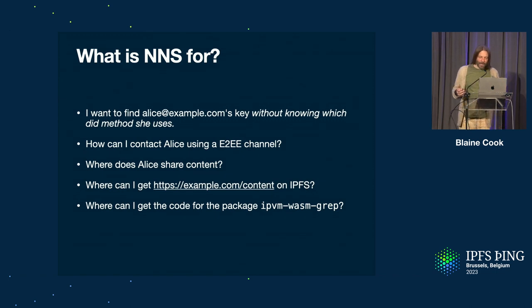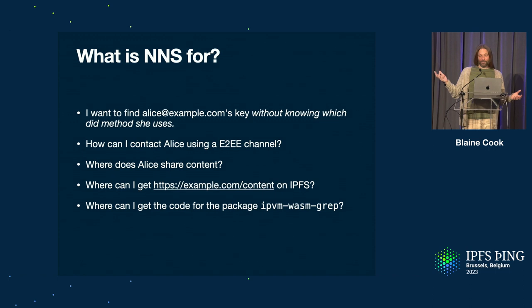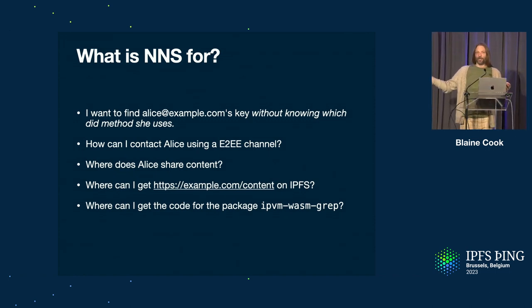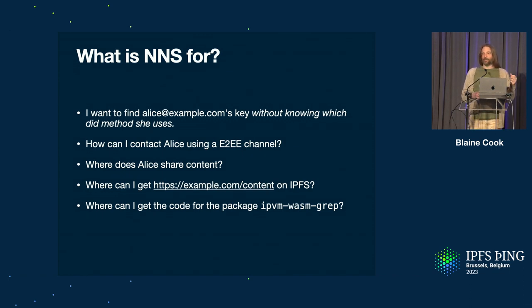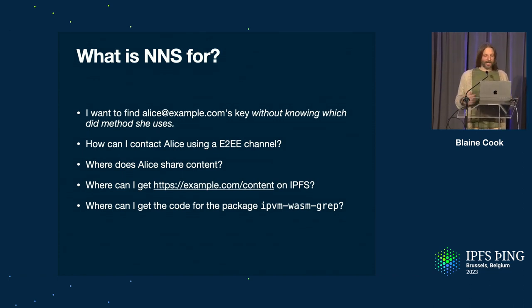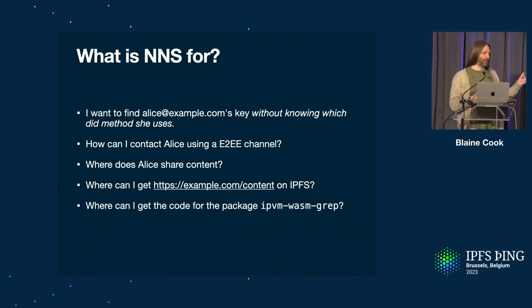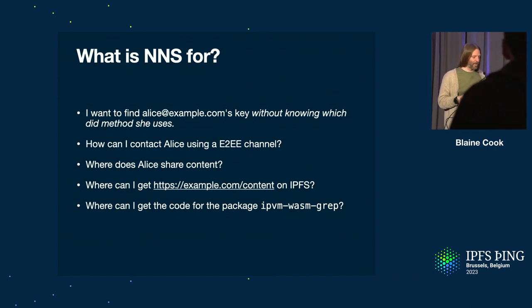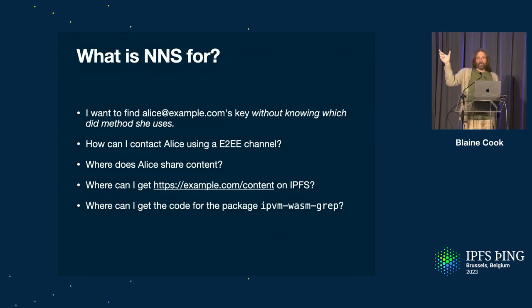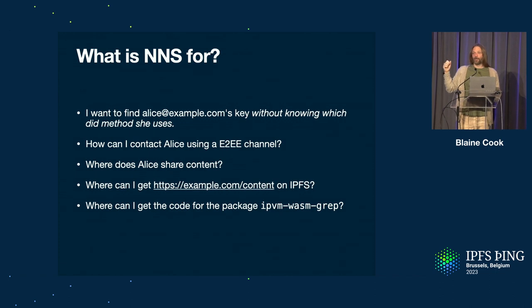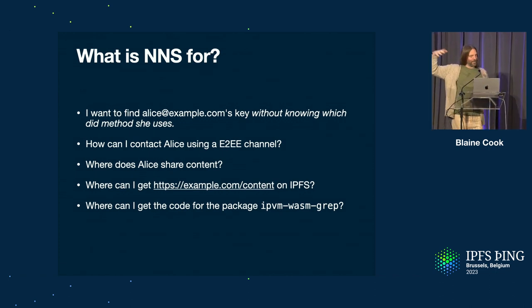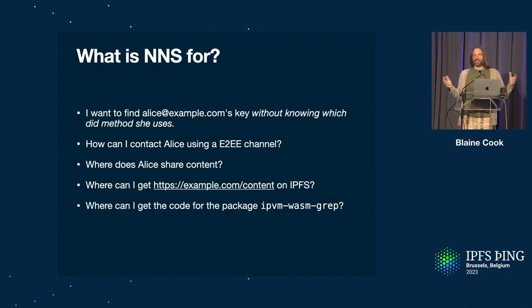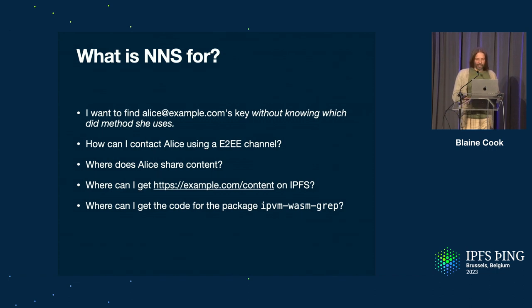There are lots of other things you could use it for. If you want to find Alice at example.com's key without knowing which DID method she uses — so if it hasn't been gossiped to you — you might use NNS to look up that key. You might want to know how you can contact Alice using an encrypted channel. Signal today uses text messaging to negotiate this, but you could use NNS. Where does Alice share content like her Instagram photos or Mastodon posts? Where can you get information at a URL on IPFS? We have IPFS, we've got lots of CIDs in the content cloud, but if you want to know where someone's blog exists in the IPFS network, that's a little bit harder to deduce.